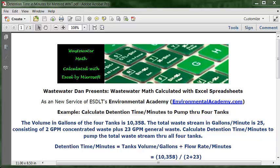So the 10,358 and the 25 are the two numbers needed to solve this problem. Let's look at the formula. The formula is detention time in minutes equals tanks volume in gallons divided by flow rate in minutes.